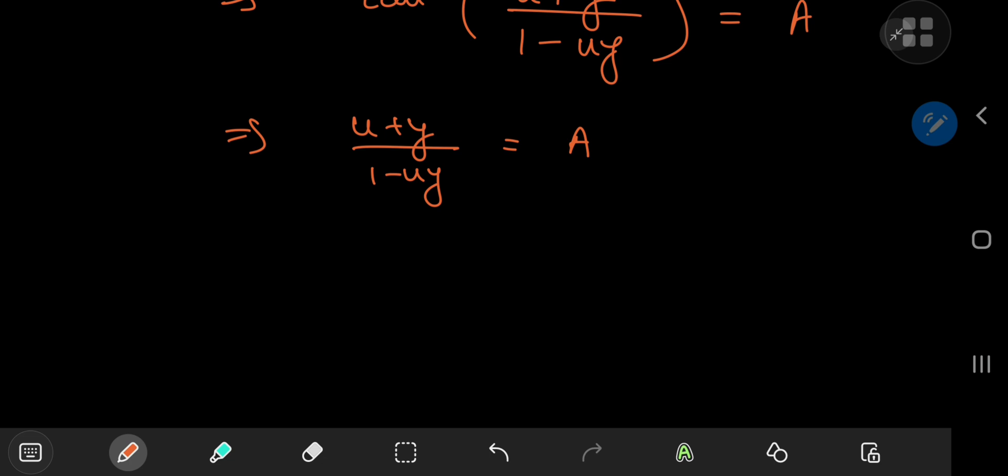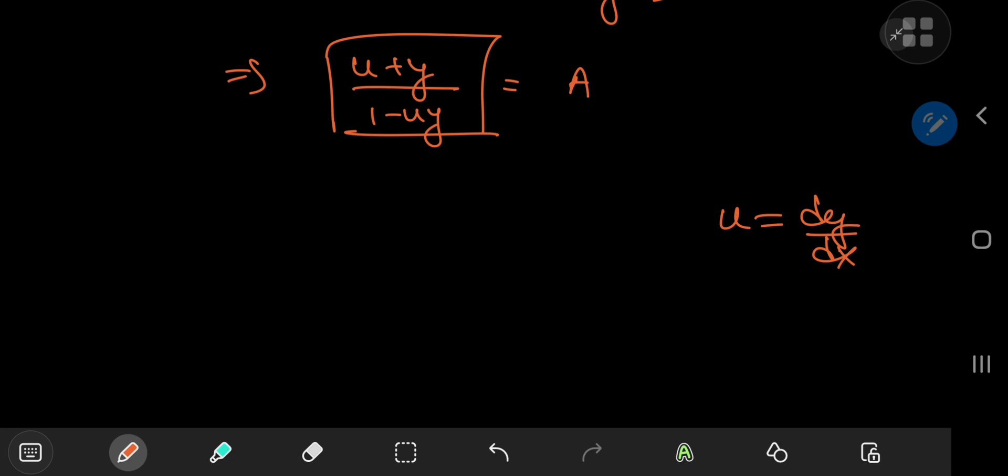And on the left-hand side, I have this function of both u and y. Remember exactly what the u variable was. u was defined as dy by dx. So the next target would be to solve the equation for u, so that I can get a first-order differential equation in dy by dx, and then I can solve that for the functional relationship between x and y.